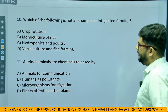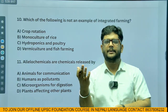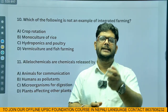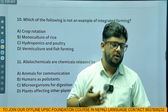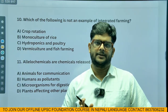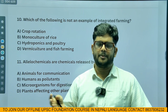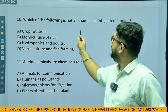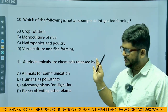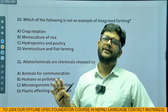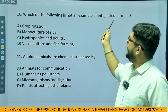Which of the following is not an example of integrated farming? Crop rotation is very important for integrated farming — it enhances soil fertility. Hydroponics and vermiculture and fishing are also important. Monoculture of rice is not an example of integrated farming — it is actually very bad for soil health. So the answer is monoculture of rice.